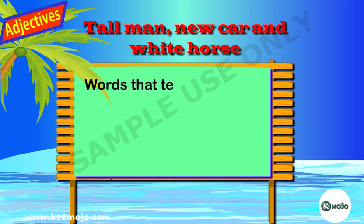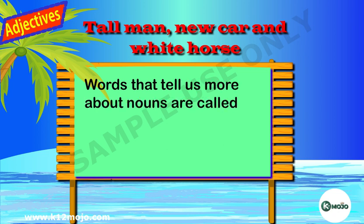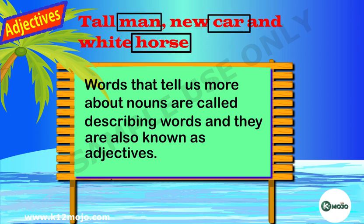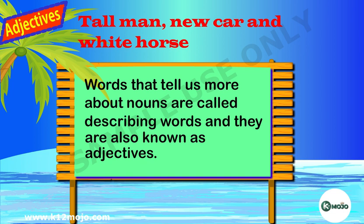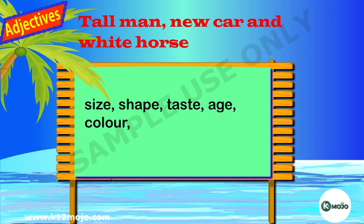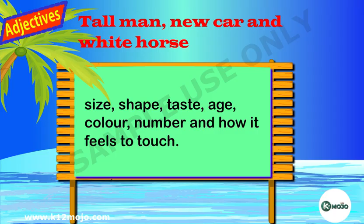Words that tell us more about nouns are called describing words, and they are also known as adjectives. Adjectives tell us these things about the noun: size, shape, taste, age, color, number, and how it feels to touch.